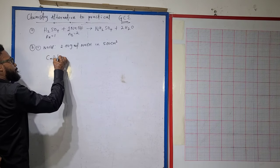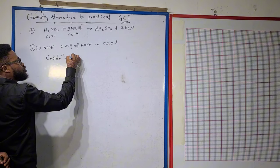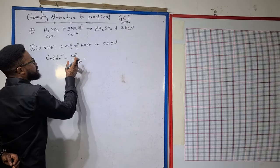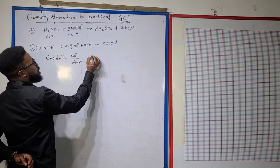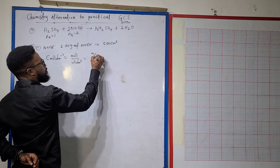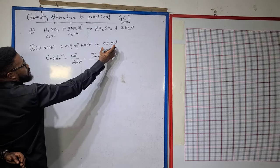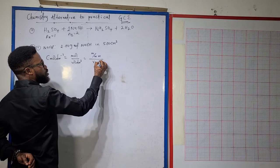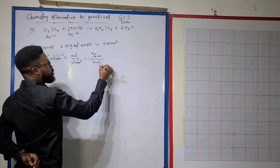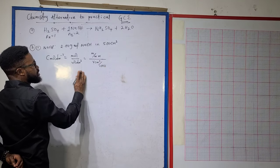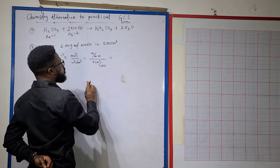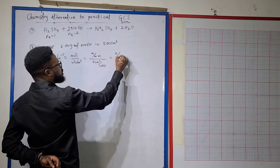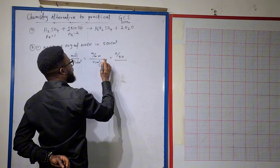Concentration in moles per dm³ is moles divided by volume in dm³. I wasn't given the moles, but I was given the mass, so I could use mass over molar mass for my numerator. For the volume, I was given cm³, so I convert to dm³ by dividing by 1000.